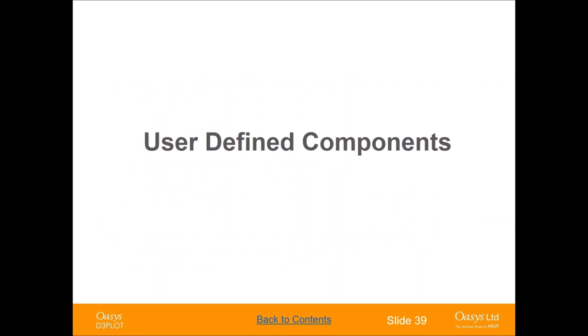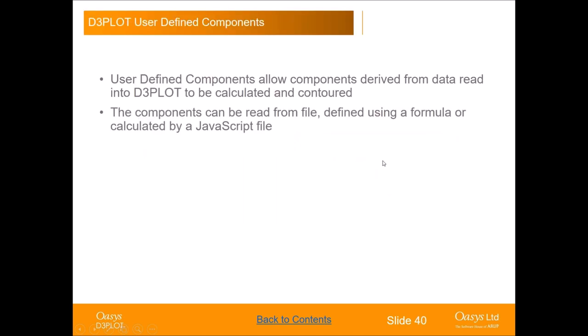Now I want to concentrate on D3 Plot and the first thing I want to talk about is user-defined components and ways of looking at contour plots that might be helpful. User-defined components allow you to create your own components derived from data read into D3 Plot. There are different methods: you can read from a file, or calculate a new component using a simple formula, or use a JavaScript for more complicated operations like if statements.